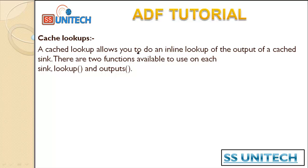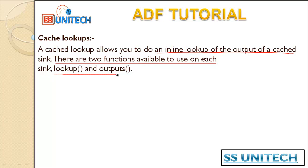A cache lookup allows you to do an inline lookup of the output of the cache sync. There are two functions available to use on each sink - lookup and outputs. We have already used outputs in the last video; in this video we are going to use the lookup function.